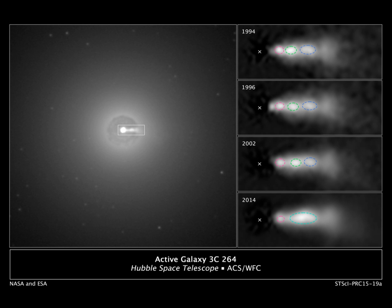Relativistic jets are beams of ionized matter accelerated close to the speed of light. Most have been observationally associated with central black holes of some active galaxies, radio galaxies or quasars, and also by galactic stellar black holes, neutron stars or pulsars. Beam lengths may extend between several thousand, hundreds of thousands or millions of parsecs.